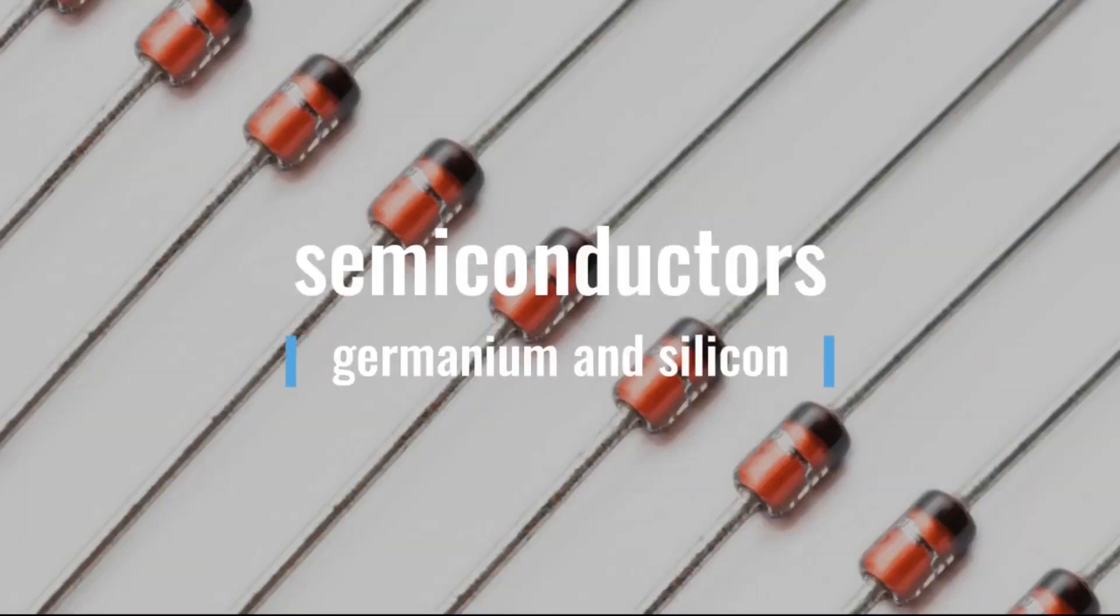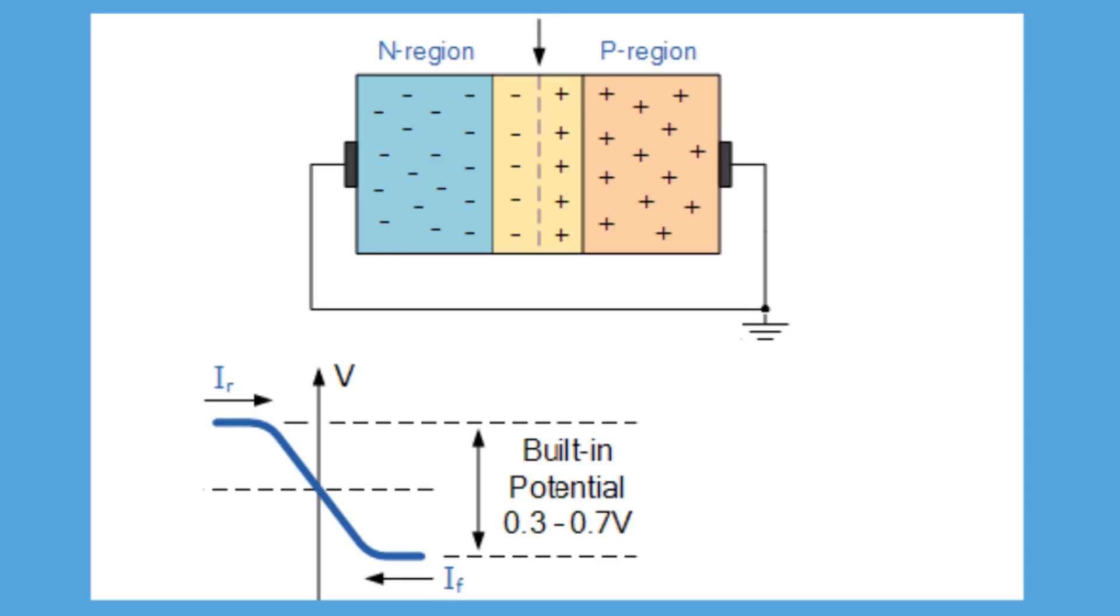Since diodes are made from semiconductors such as germanium and silicon, a semiconductor diode, the most commonly used type of diode today, is a crystalline piece of semiconductor material with a p-n junction connected to two electrical terminals, where P stands for positive and N stands for negative.